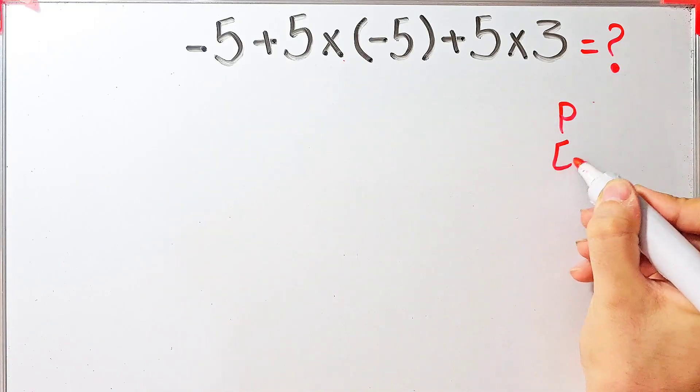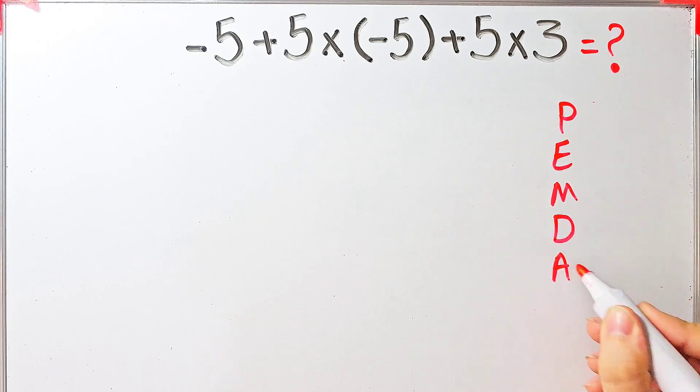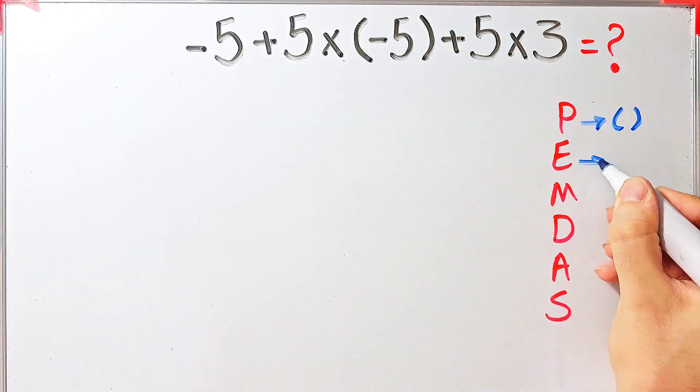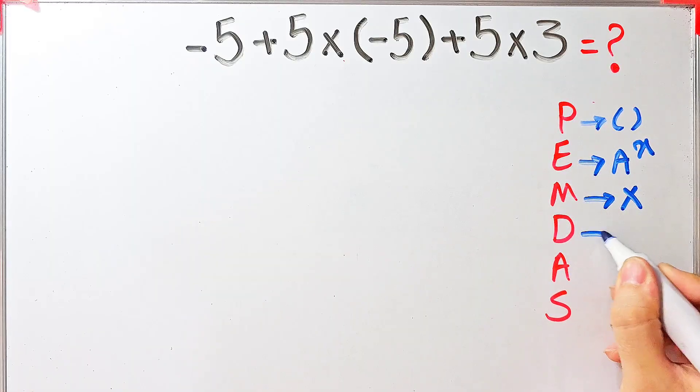PEMDAS shows the priority of the mathematical operations, and if you don't pay attention to this rule you get the wrong answer. In this rule, P stands for parentheses, E stands for exponent, M stands for multiplication, D stands for division, A stands for addition, and S stands for subtraction.